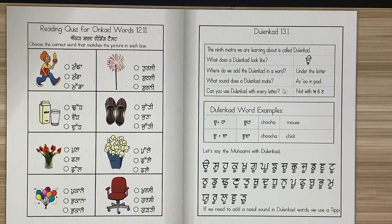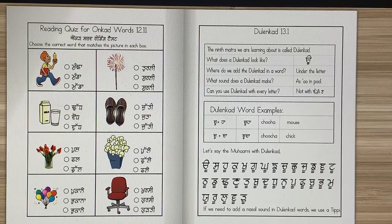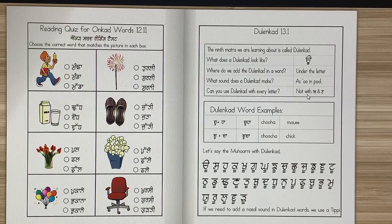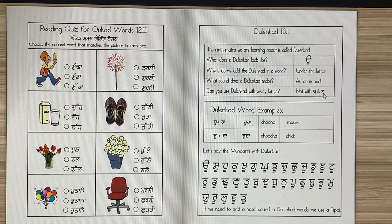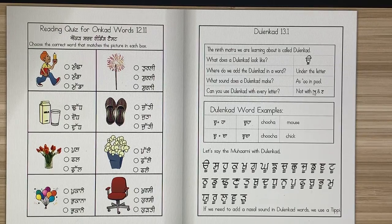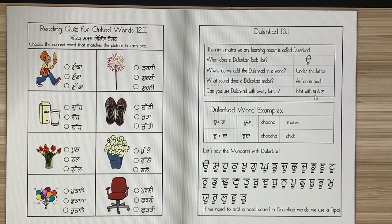What sound does it make? It makes a sound 'ooo' as in pool, shoe, fool. You can use it with all the letters except Ada and Iri — you will never see the 'ooo' sound made with Ada and Iri. Remember those three letters: Ooda, Ada, Iri — they are so picky. They each pick three matras.